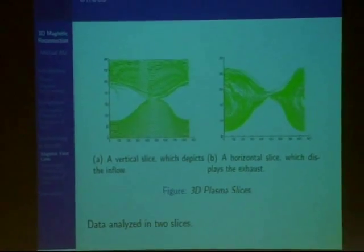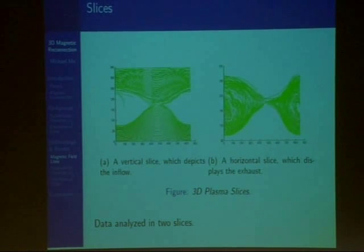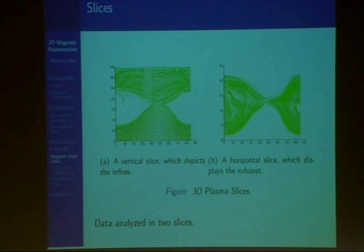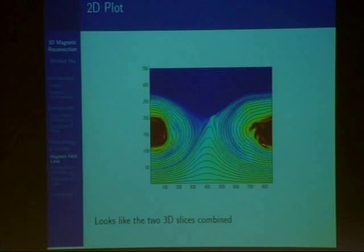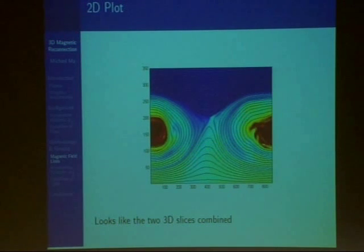After tracing thousands of field lines, it was discovered that the general shape of the field lines only changed really minimally in the y direction. So we could analyze the data in two slices instead of three or more. If you look here on the left, this is one of the two slices called vertical slice, which shows the inflow section of the plasma. On the right is the exhaust section of the plasma. When you actually combine these two slices, it actually looks really similar to the 2D plot, which is shown here.